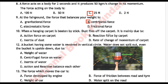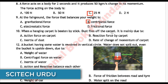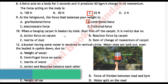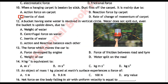Next question number 10: When a hanging carpet is beaten by a stick, dust flies off the carpet. It is mainly due to — Option A: action force on carpet, Option B: reaction force by carpet, Option C: inertia of dust, Option D: rate of change of momentum of carpet. Correct answer is Option C: inertia of dust.